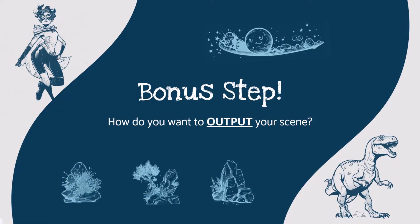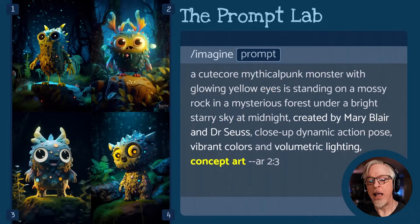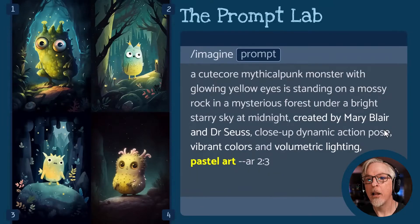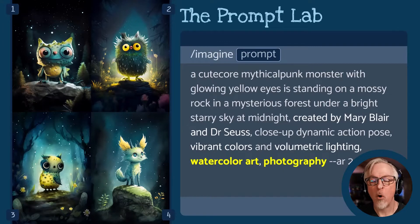As a final bonus step, you can also specify how you want to output your image — is it a drawing, a painting, concept art, watercolor? By adding one of these terms to the end of your prompt, you can totally alter the way the image is rendered. For example, I added 'concept art' to our Blair prompt, and you can see the composition and details are all massively enhanced. Or I can specify 'pastel art,' and now we've gone from a more rendered image to something more hand-drawn. You can even combine terms such as watercolor or photography. Experiment and explore.